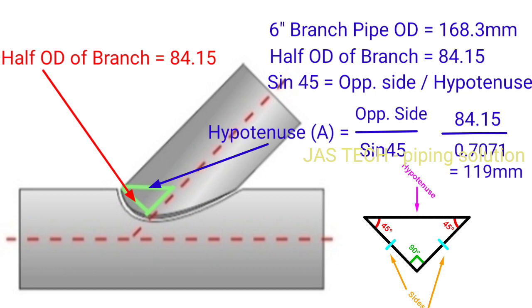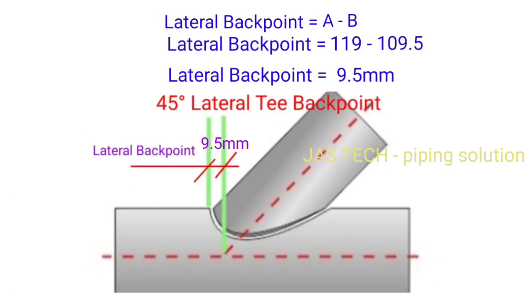We need hypotenuse side A distance, so A equals opposite side divided by sin 45. We know the opposite side value is 84.15 divided by sin 45 value 0.7071. By using calculator, the answer is 119mm. This is the A side value.